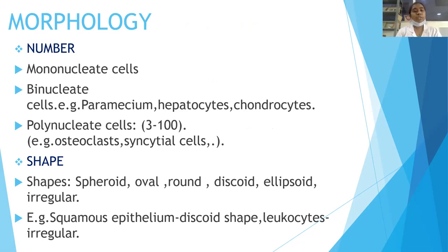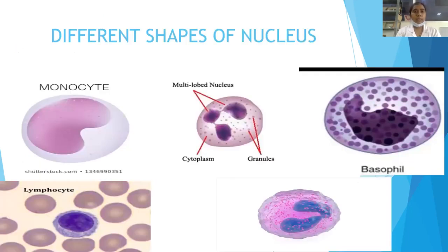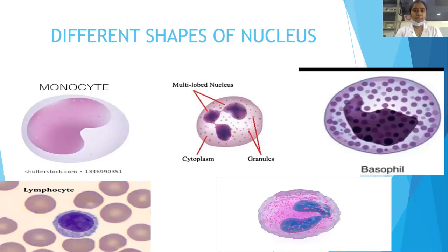According to shape, what shapes can the nucleus have? Shapes include spheroid, oval, round, discoid, ellipsoid, and irregular. For example, squamous epithelium exhibits a discoid shape, and granulocytes exhibit an irregular nucleus. Different shapes can be seen in monocytes and multilobed nuclei. The neutrophil and basophil have distinct shapes, while lymphocytes are round and eosinophils have a bilobed nucleus shape.